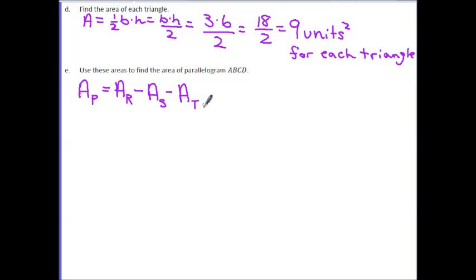So I can just fill in these pieces. Area of rectangle, we found to be 48. Area of the triangles, we're each 9. So when we take 48, subtract 9, and then subtract another 9, we're left with 30 units squared.